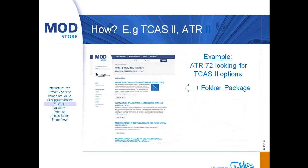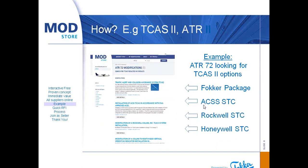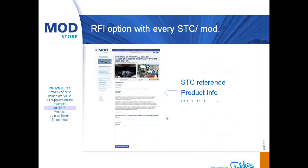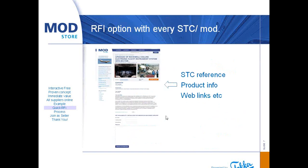How does it work? If you are an operator, you select your aircraft type, enter the right search term, and all options are shown online and you can select them. If you select one, the modification typically looks like this.